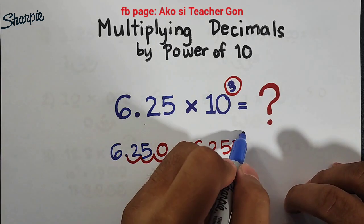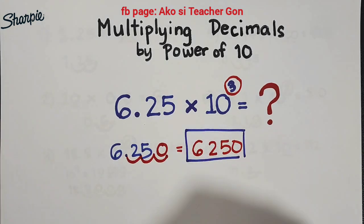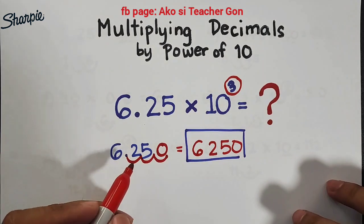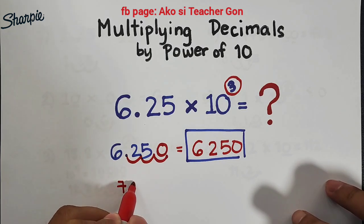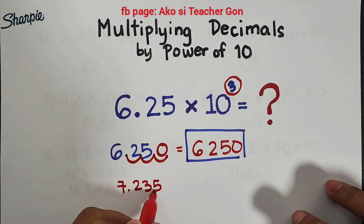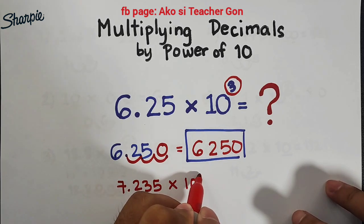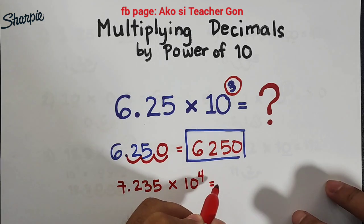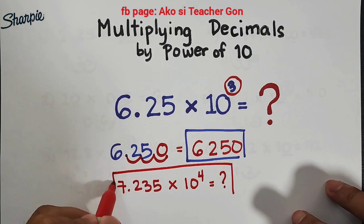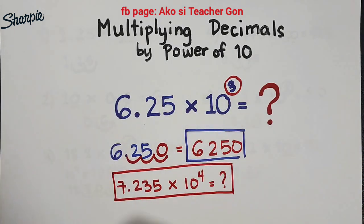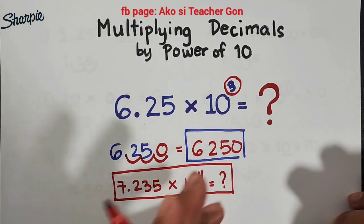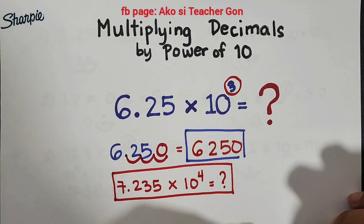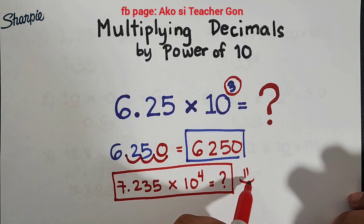I hope you learned something from this video on how to multiply decimals by the power of 10. Now as your assignment, I want you to answer: what is 7.235 multiplied by 10 raised to the 4th power? I hope I can see your answers in the comment section. If you're new to my channel, don't forget to like and subscribe and hit the bell button for updates on our latest uploads. Again, it's me, teacher Gon. Maraming maraming salamat. Bye-bye!